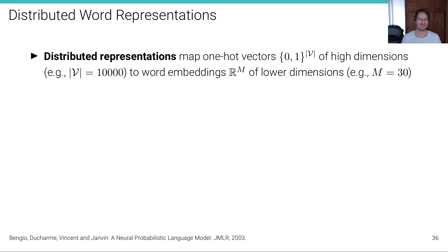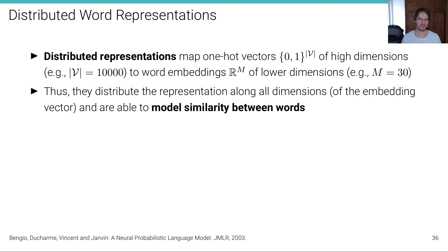The idea put forward in this paper is to use a different representation: a so-called distributed representation that maps one-hot vectors — long vectors with one element equal to one in high dimensions, say 10,000 vocabulary size — to word embeddings in R^m of much lower dimensions, where m might be 30 or 100. These distributed representations distribute information along all dimensions of the embedding vector. Before, all the information was contained in one dimension, but now we have a real-valued vector with a different real number for each of these 30 dimensions.